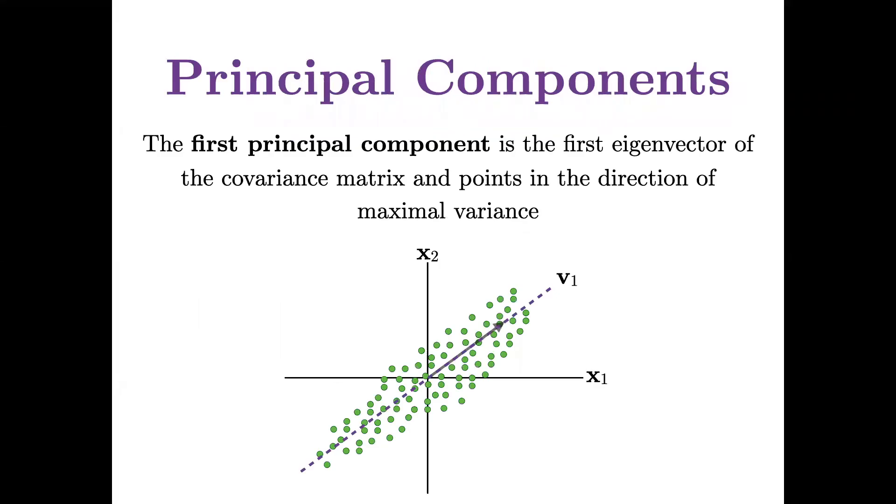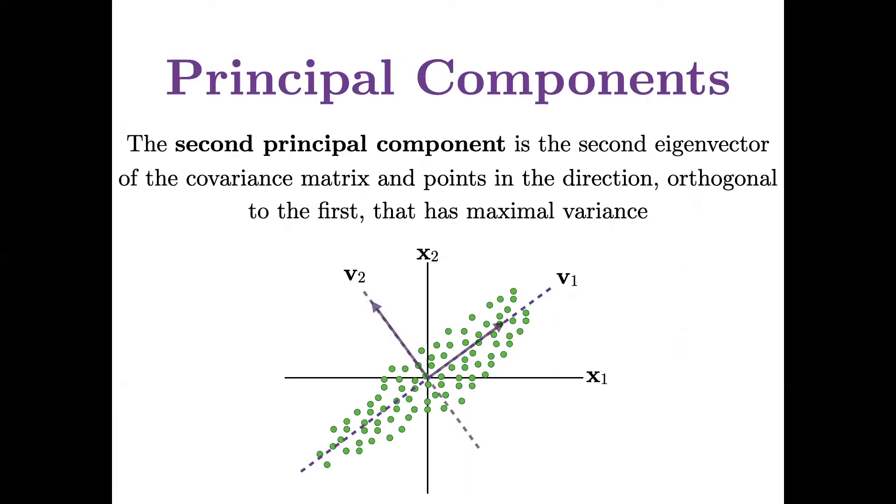We also saw just a general description of what principal components are, the first principal component being that direction in which the variance of the data is maximal, the second component being orthogonal to the first, and being the next direction of largest variance.